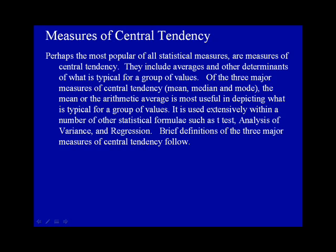Perhaps the most popular of all statistical measures are measures of central tendency. They include the mean or average and other determinants of what is typical for a group of values. Of the three major measures of central tendency — the mean, the median, and the mode — the mean or arithmetic average is most useful in depicting what is typical for a group of values. It is used extensively within a number of other statistical formulas, such as t-test, analysis of variance, and regression. Brief definitions of the three major measures of central tendency follow.